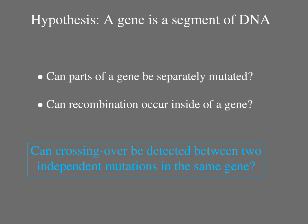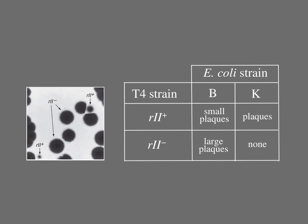He could thus conclude that the answers to both questions he posed was yes, and the implication was that a gene is a series of base pairs. Benzer used two different strains of E. coli, called B and K, and two different strains of T4 phage, wild-type and R2, or rapid lysis mutants.